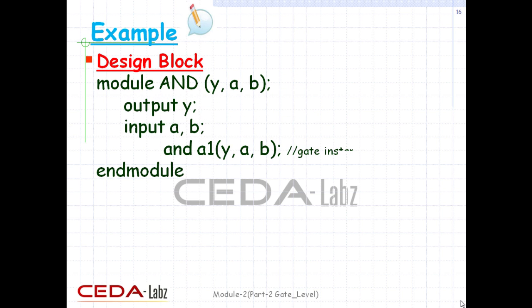Here is a simple example of an AND gate. We start with the module keyword, module name, and port list. Note: if we write the module name 'and' in small letters, Verilog will interpret it as the and gate primitive — so take care not to use any predefined primitive name as a module name. Y is declared as output, and A and B are declared as inputs. The and gate is instantiated, and finally the module is terminated with the keyword end module.